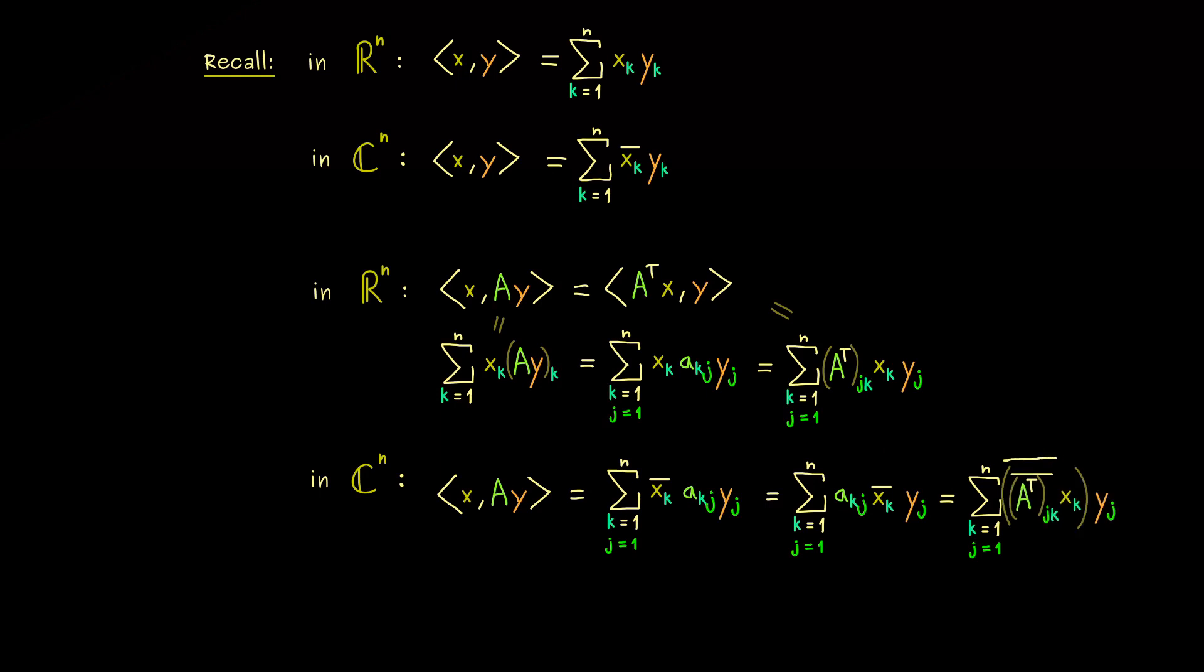This is needed because we know we have the complex conjugation on the whole first entry of the inner product. So only by doing that, we can write the inner product now with the matrix A in the first argument. However, it's not the matrix A, and also not the transpose as before, it's a so-called adjoint.